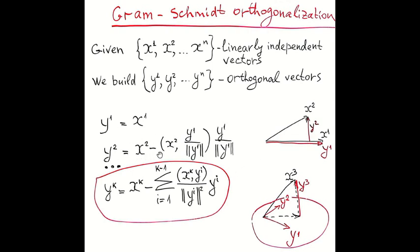The procedure is written here. So we subtract from x_2 its projection. So in order to get the projection, we normalize vector y_1, take inner product. And this number multiplied by the vector of direction y_1, by the normalized vector.